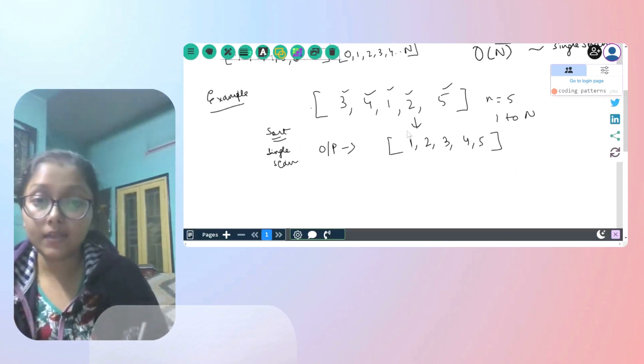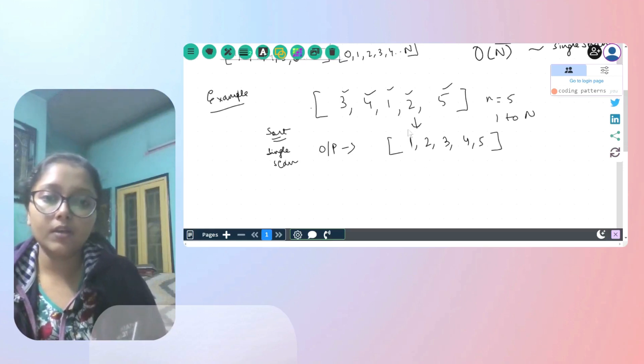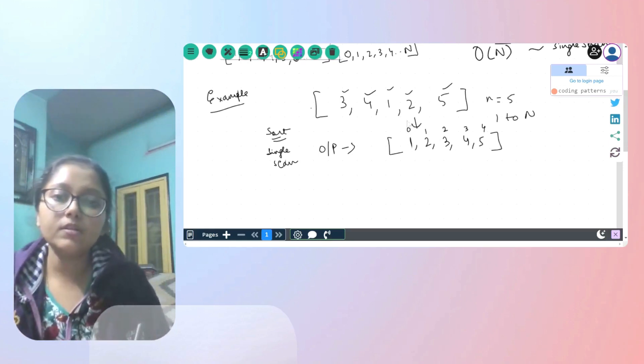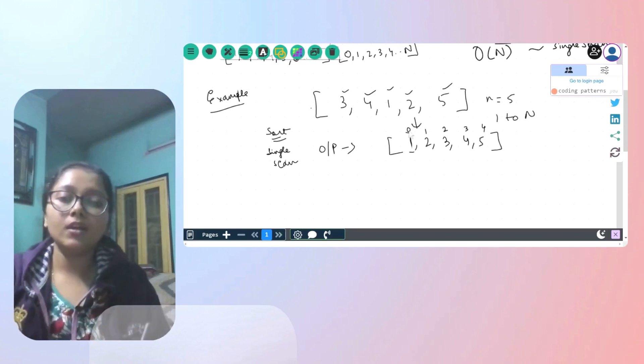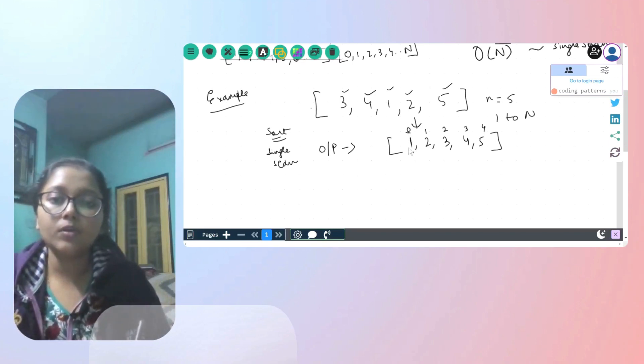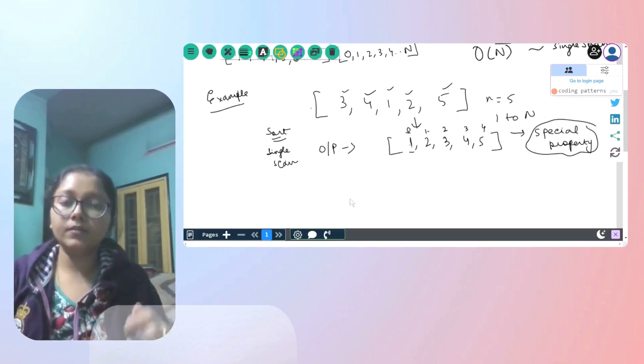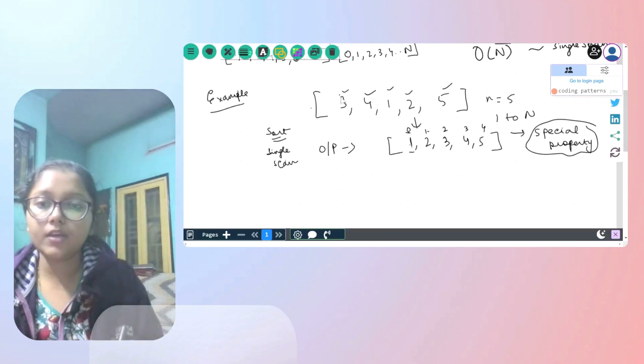Now, if you notice the index positions of all of these after sorting, what are the index positions? So after sorting, if this is my final array is going to look like this. Notice there is a relation between the index number and the number that we are storing, essentially because it is in a given range. The given number is nothing but the index value plus one: zero plus one is one, one plus one is two, two plus one is three, and so on. And this is the very fact which we are going to make use of. This is a special property which we are going to make use of for sorting this array in one single pass.